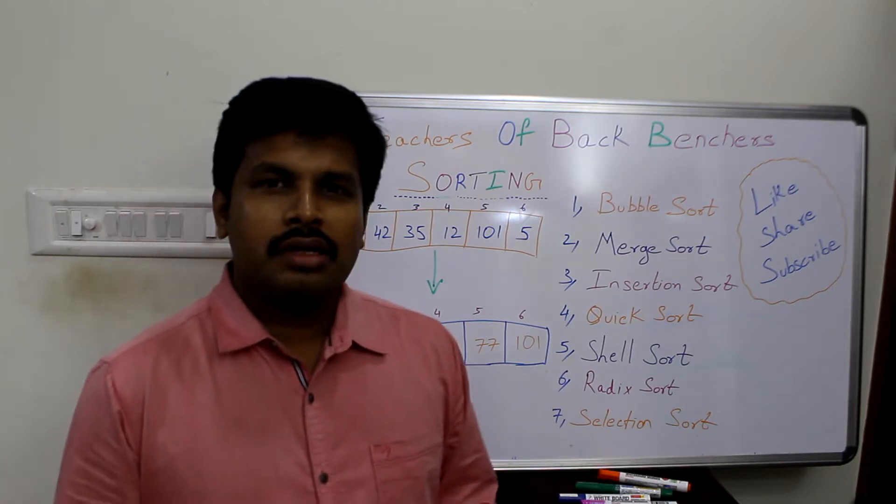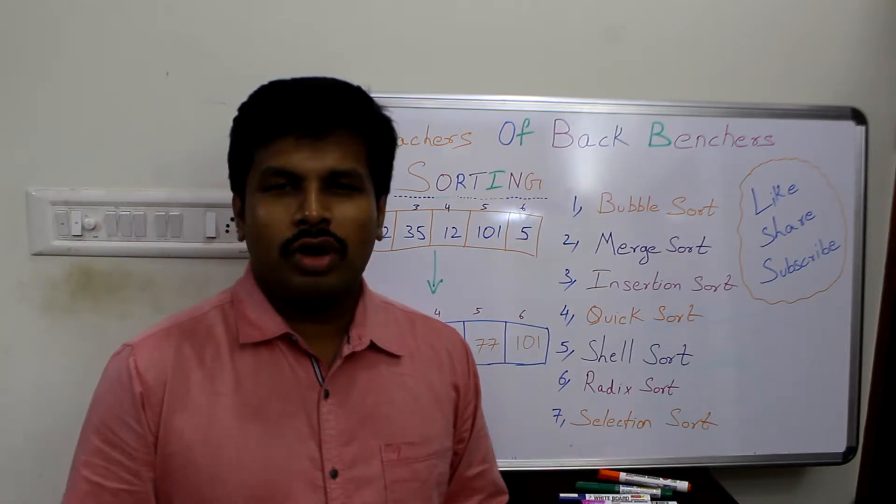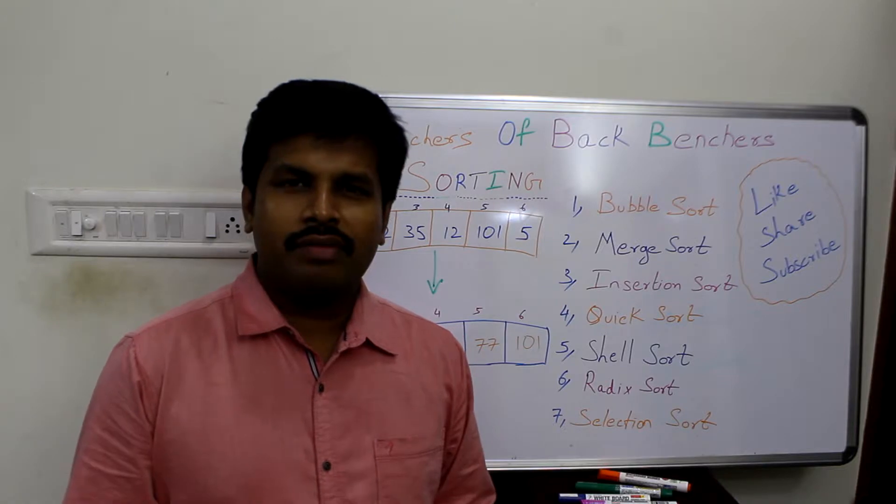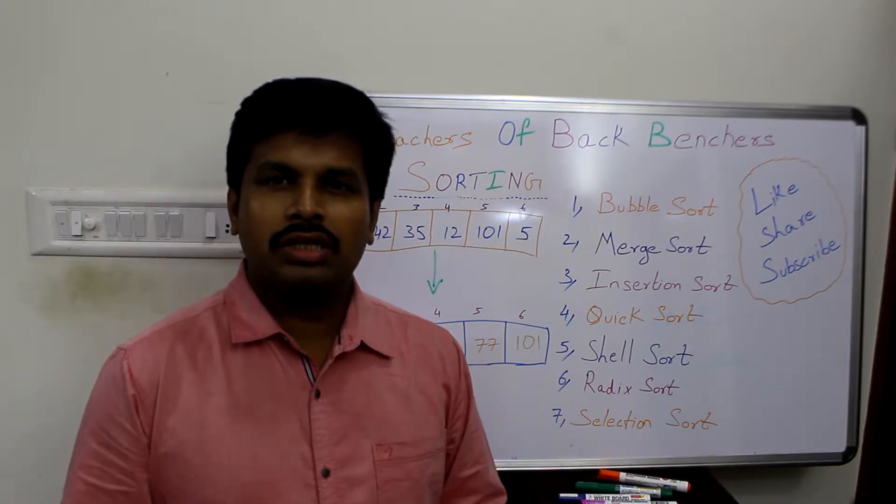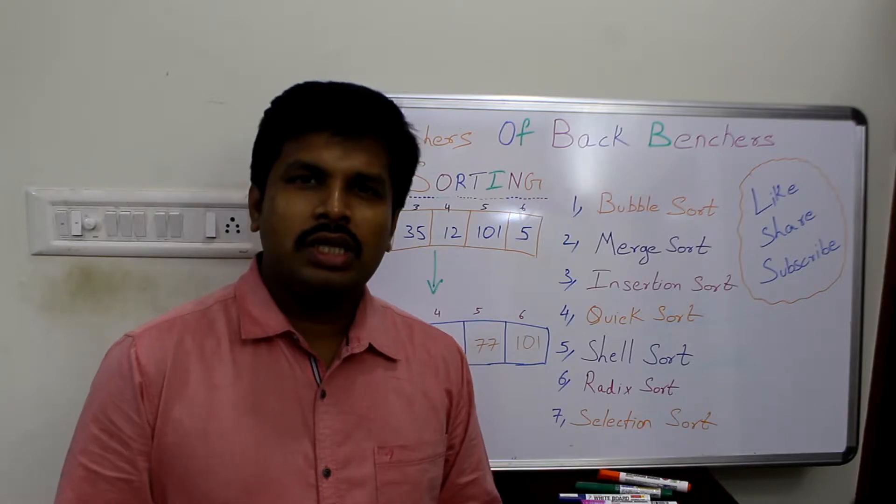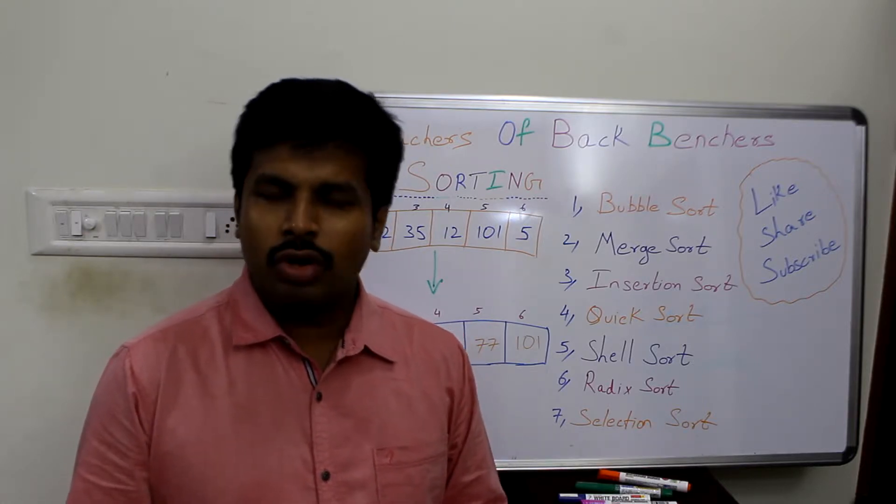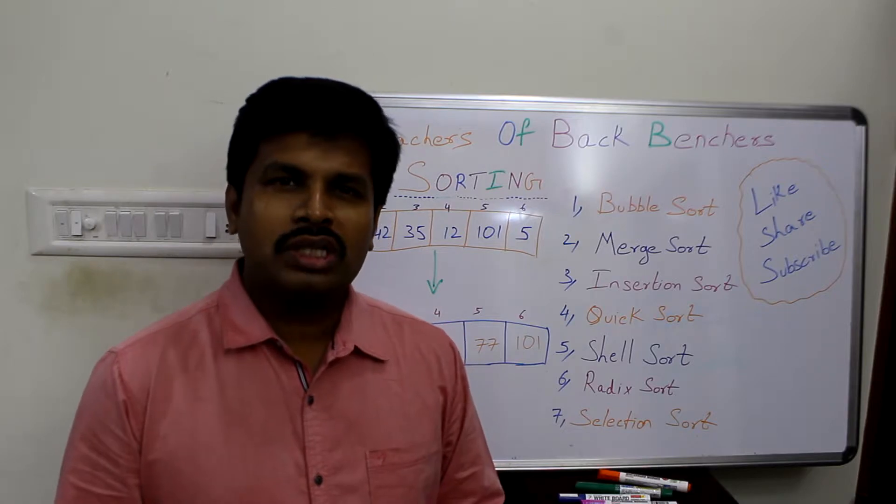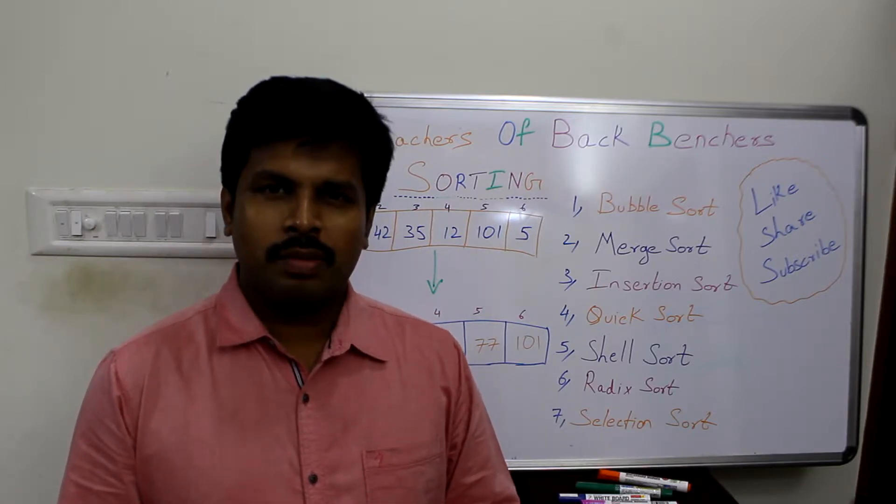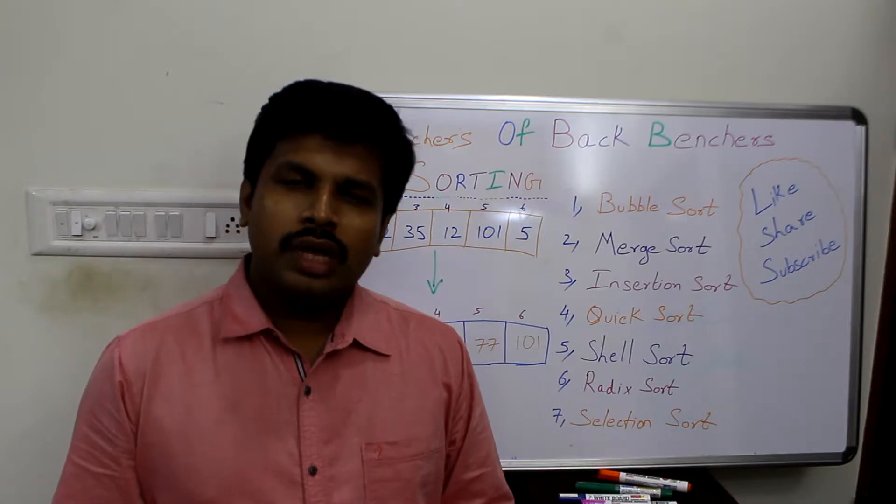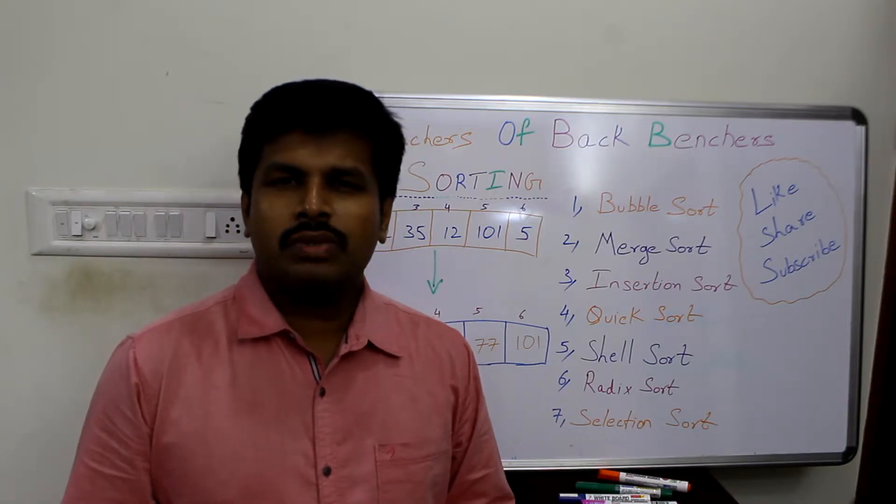This is called sorting because we are going to sort a given series where the series is not been sorted. A jumbled number of series is given as input and a sorted series is the output. Now what is the strategy or what are the strategies we are going to use to sort a given series?